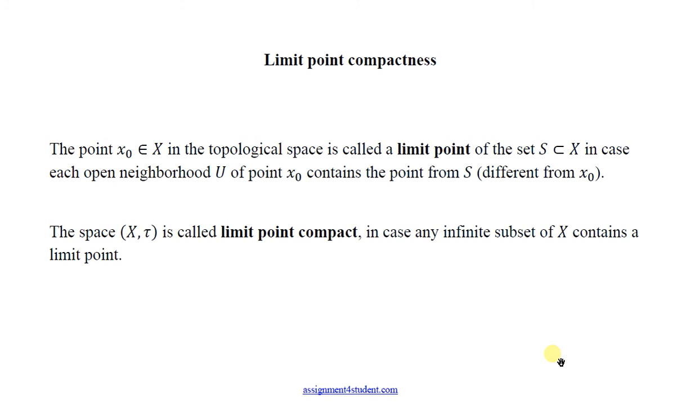Another kind of compactness is limit point compactness. The point x_0 is called limit point of the set S if each open neighborhood of point x_0 contains the point from S different from x_0. You can imagine that x_0 is very close to S so that each open neighborhood contains the point from S. The space (X, τ) is called limit point compact if any infinite subset of X contains a limit point.